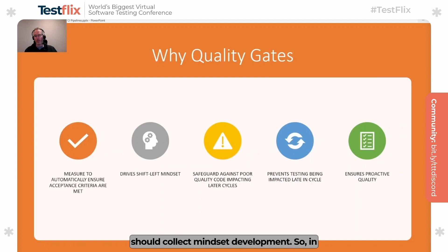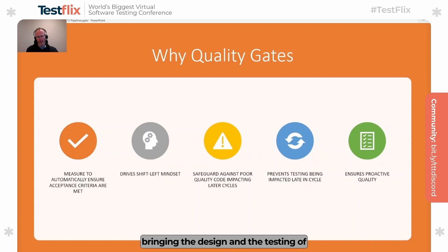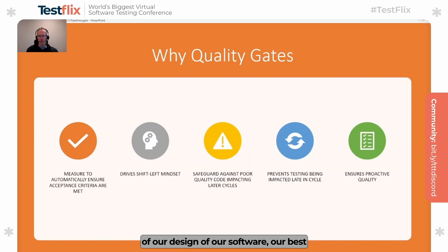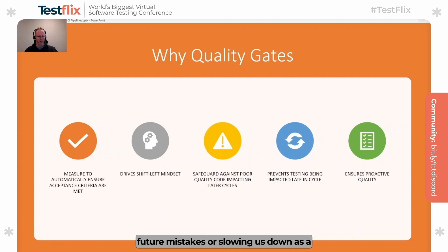Quality gates help drive a shift-left mindset in development. In order to have proper quality gates in place, particularly when they're automated, we need to ensure that we're actually bringing the design and the testing of our software earlier in the phase. We're not checking things at the end — we're checking things from the very beginning of our software design. As we're writing and implementing code, we're already starting to check whether we're happy with the quality of the output. By automating that, we're safeguarding ourselves against poor quality code later on.